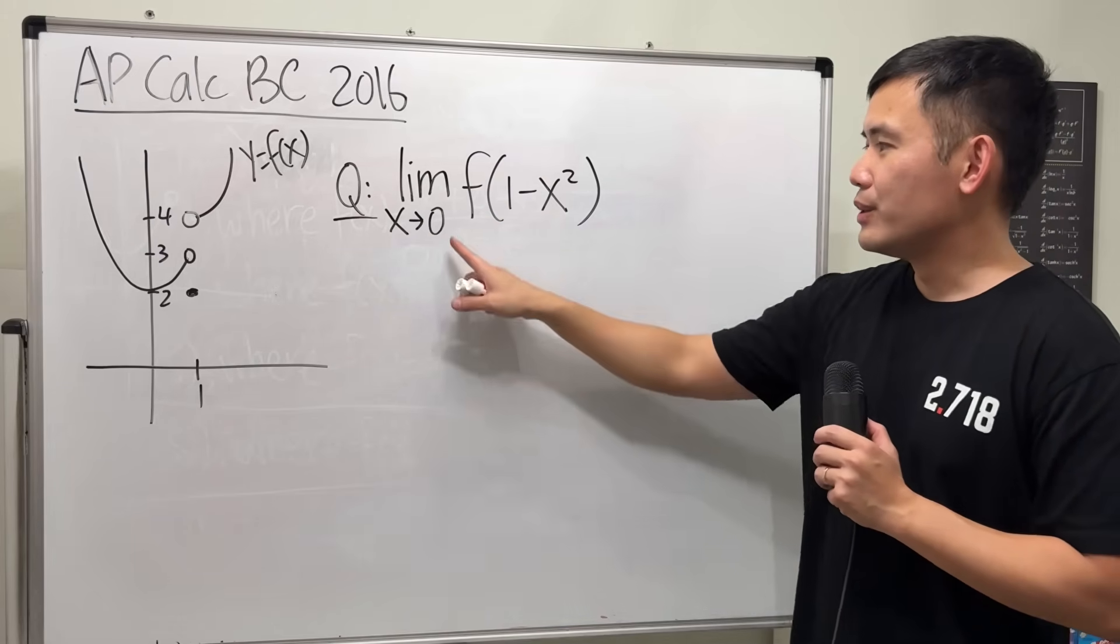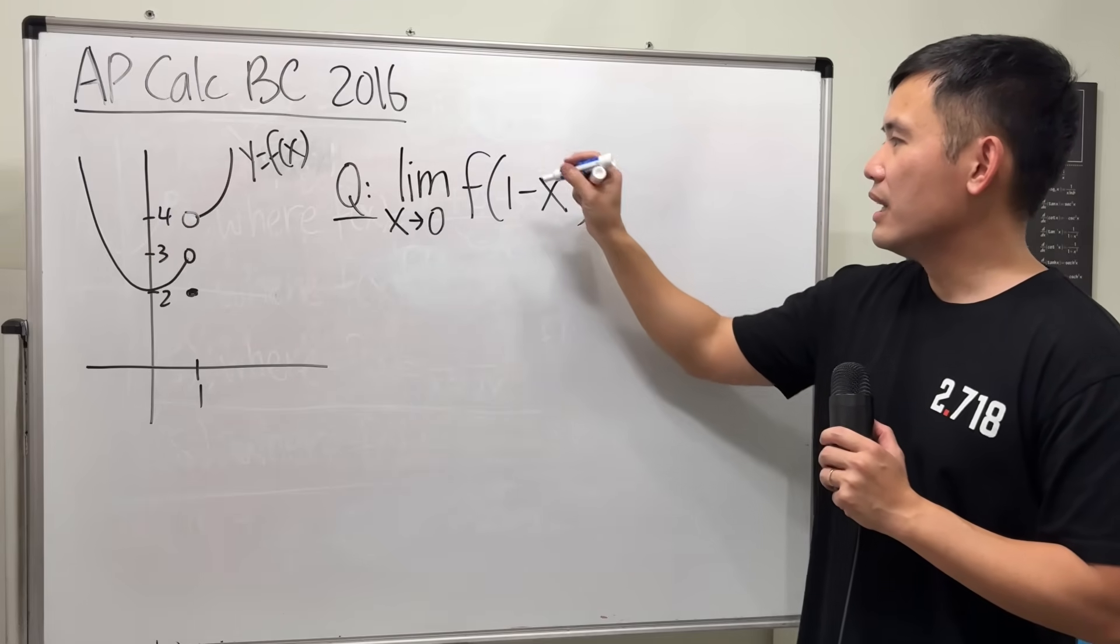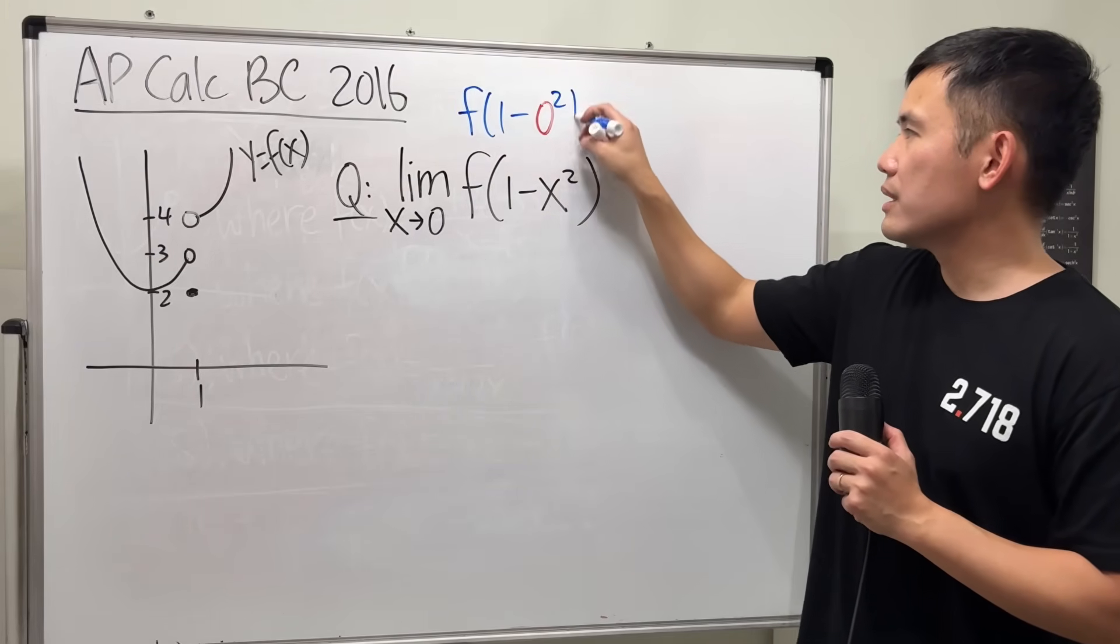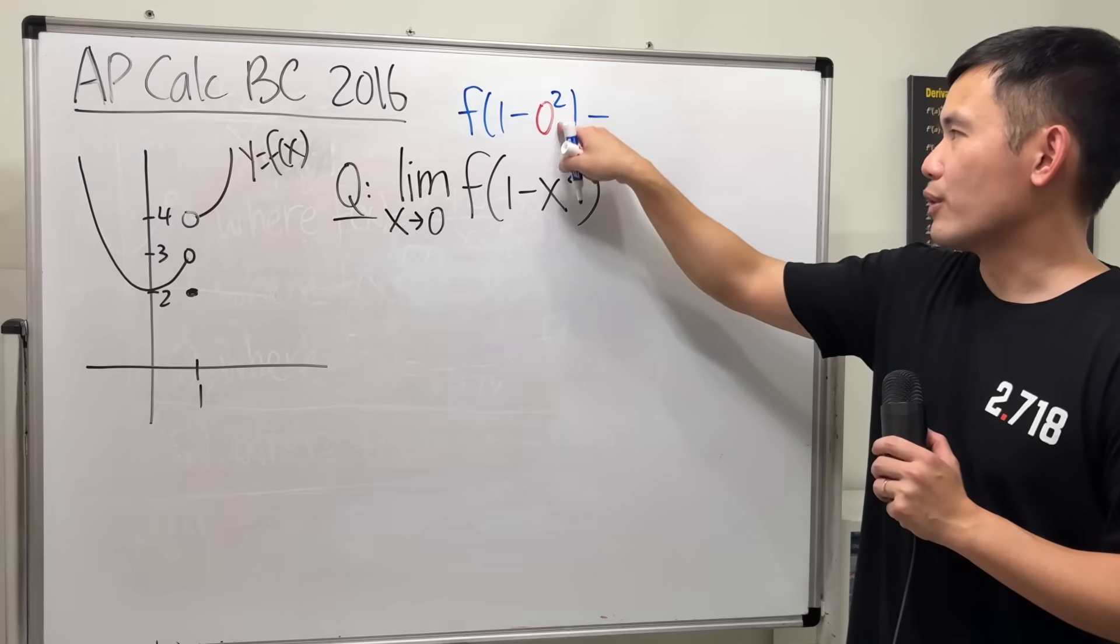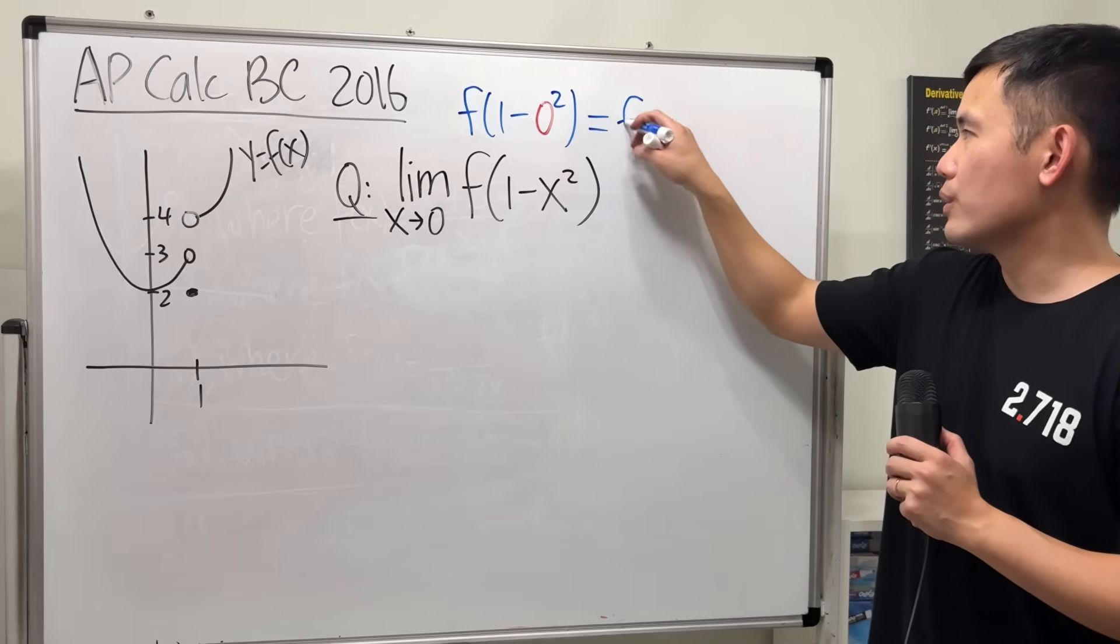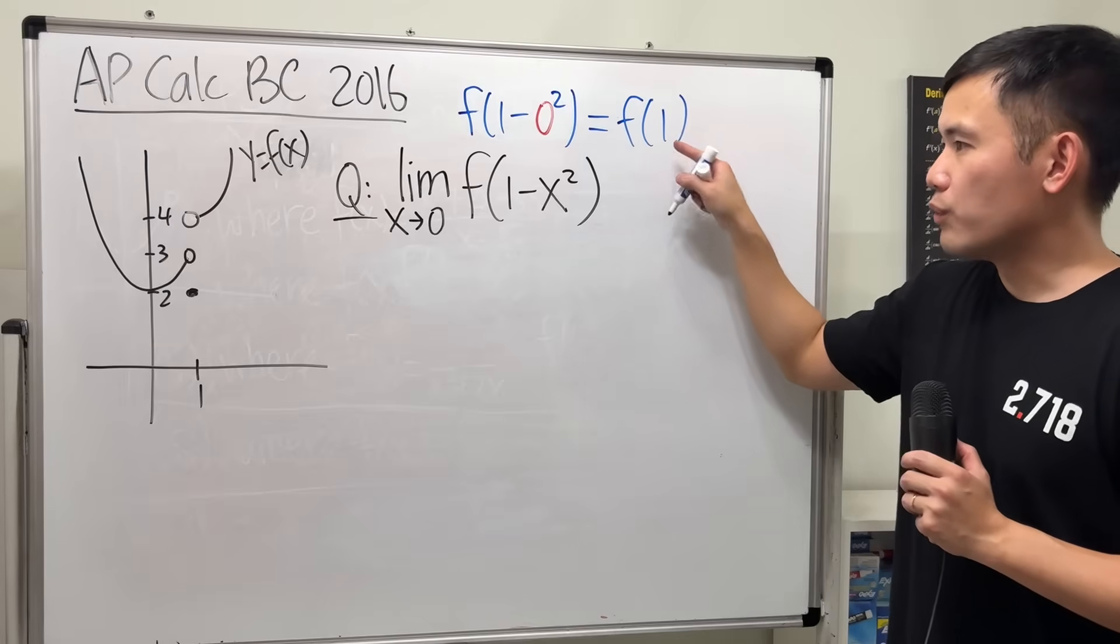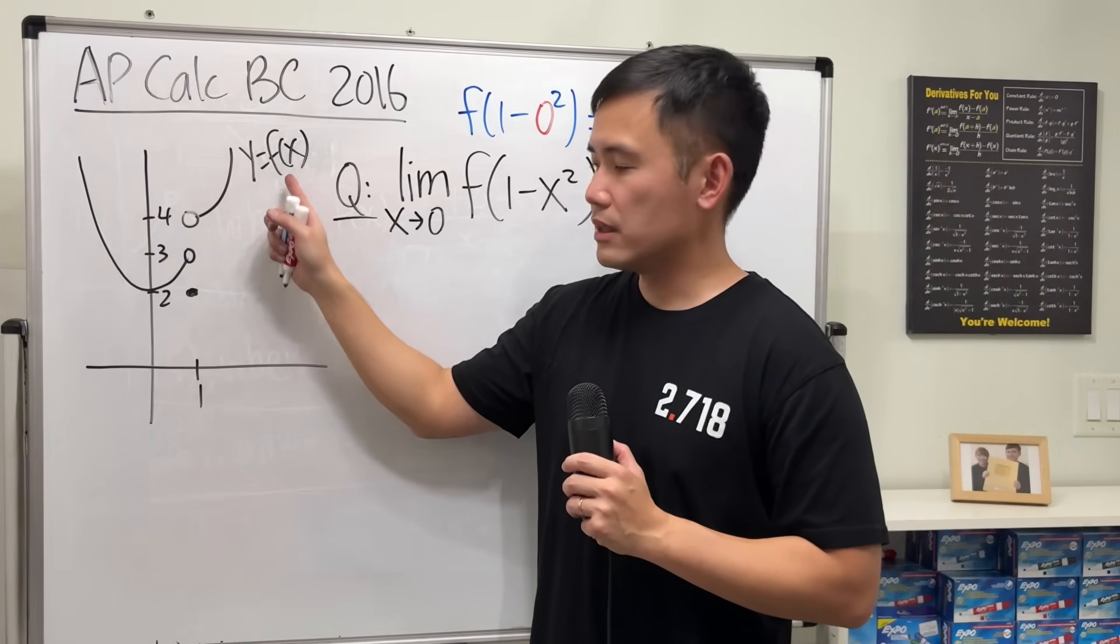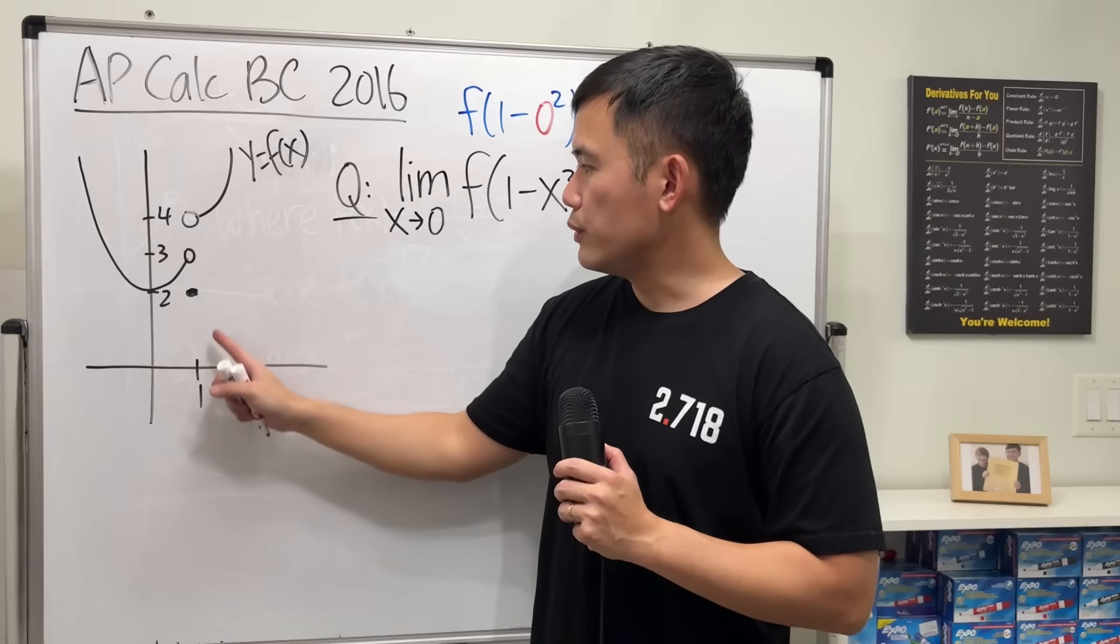Don't do this. Don't just plug in 0 into here and say that's f(1-0²). And that's of course 0, 1 minus 0 is still 1. f(1), 1 is right here and this is the graph for f(x). So plug in 1, if you look at the y value,